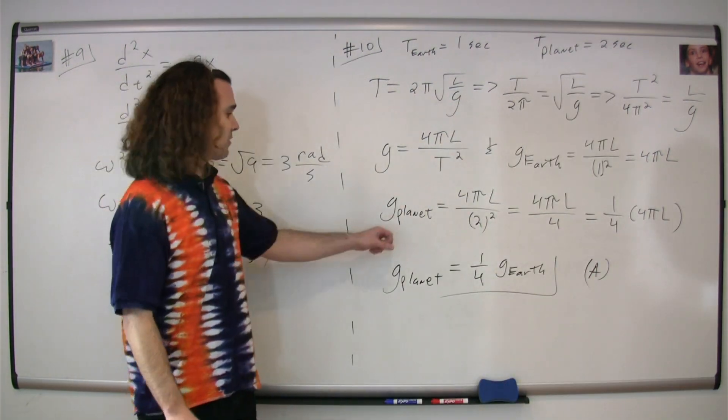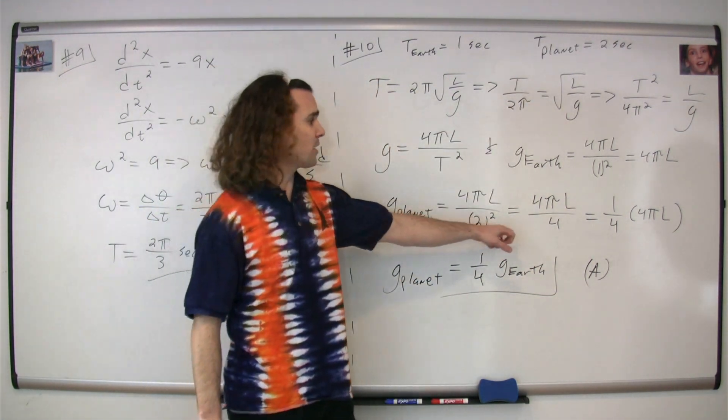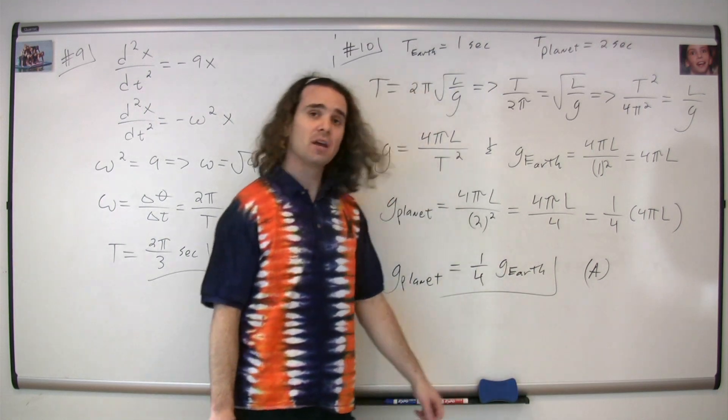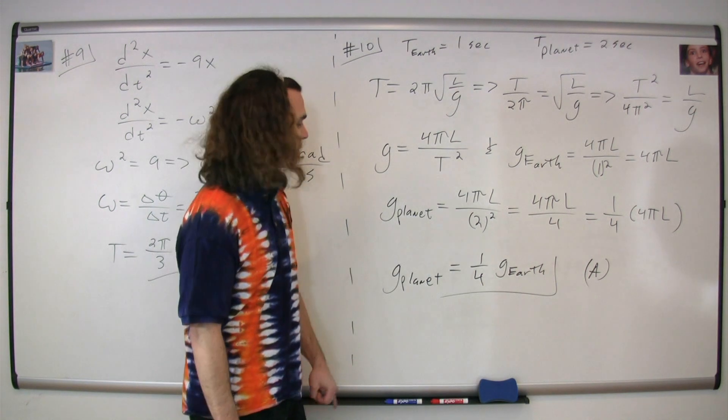We can figure out the acceleration due to gravity on the planet by substituting in the period for the planet, which is 2 seconds. Two squared is four, so you end up with one-fourth times 4πL, and 4πL is the acceleration due to gravity on Earth.